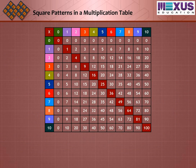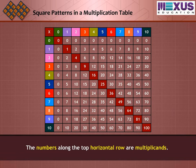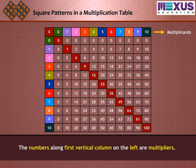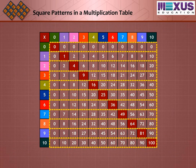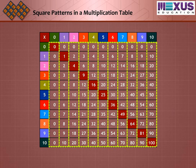Let us see the multiplication table. The numbers along the top horizontal row are multiplicands. The numbers along first vertical column on the left are multipliers. The other numbers in the rows and columns are their products.